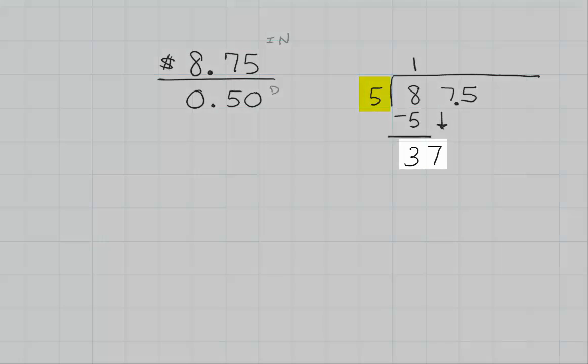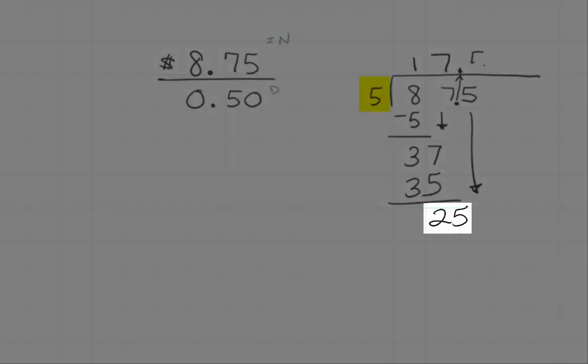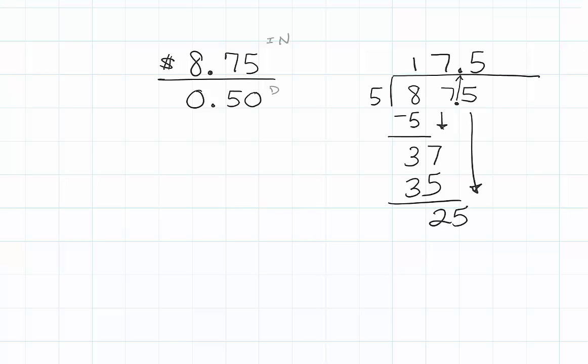5 goes into 37 seven whole times. The decimal comes up. 5 times 7 is 35, which leaves us with 2. We bring down the 5. 5 goes into 25 five times.